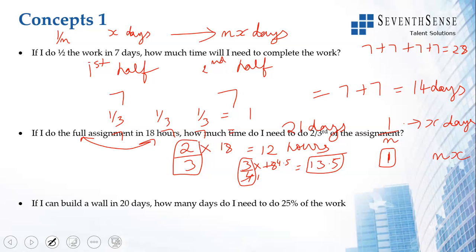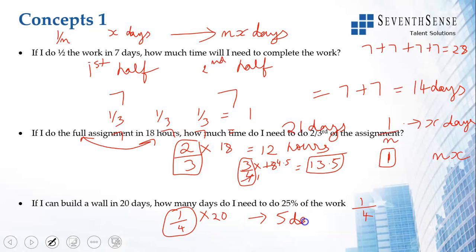If I build a wall in 20 days, how many days do I need to do 25 percent of the work? 25 percent of the work is 1 by 4. I multiply 1 by 4 into 20, so I need 5 days to do 25 percent. So the first 25 percent is done in 5 days, 50 percent in 10 days, 75 percent in 15 days, and 100 percent in 20 days.